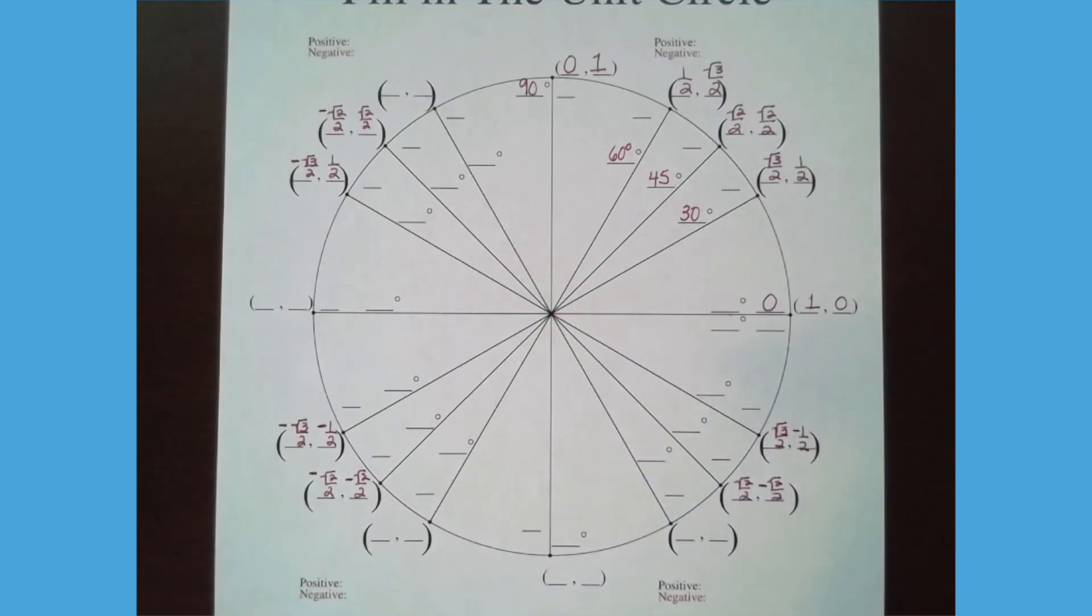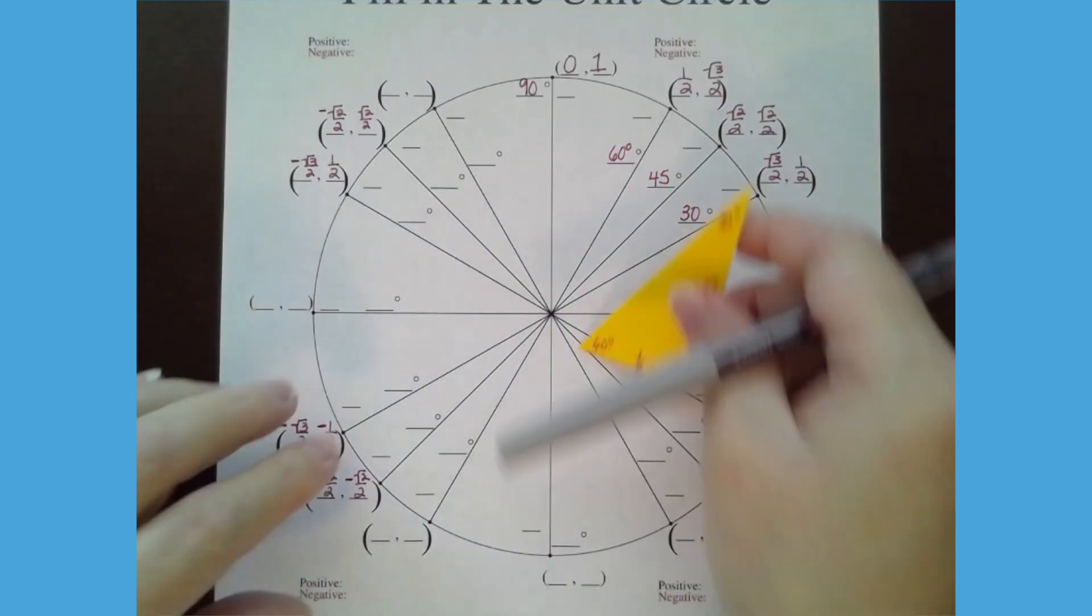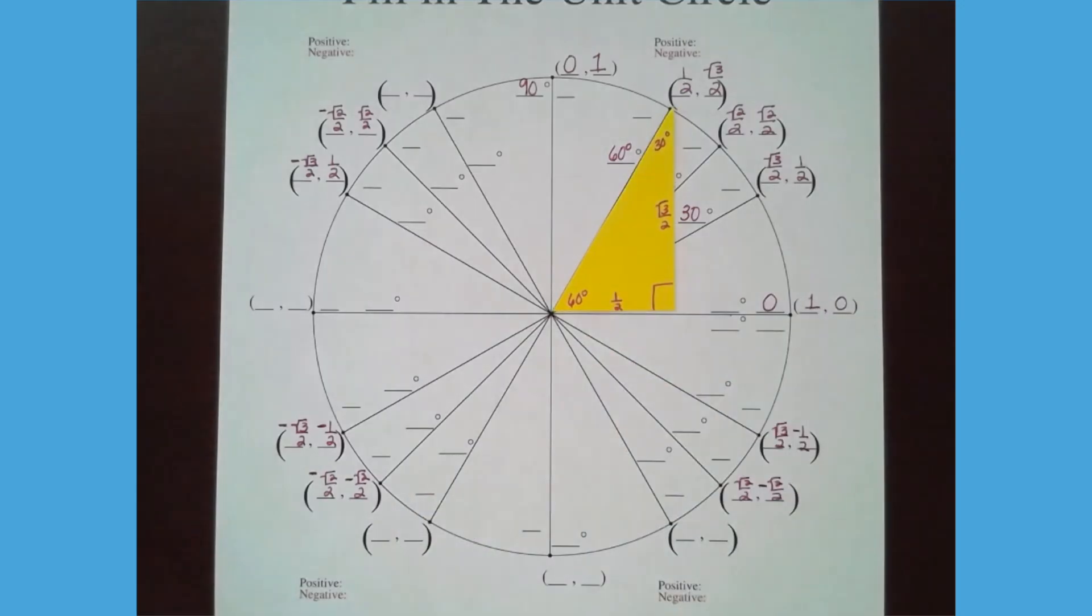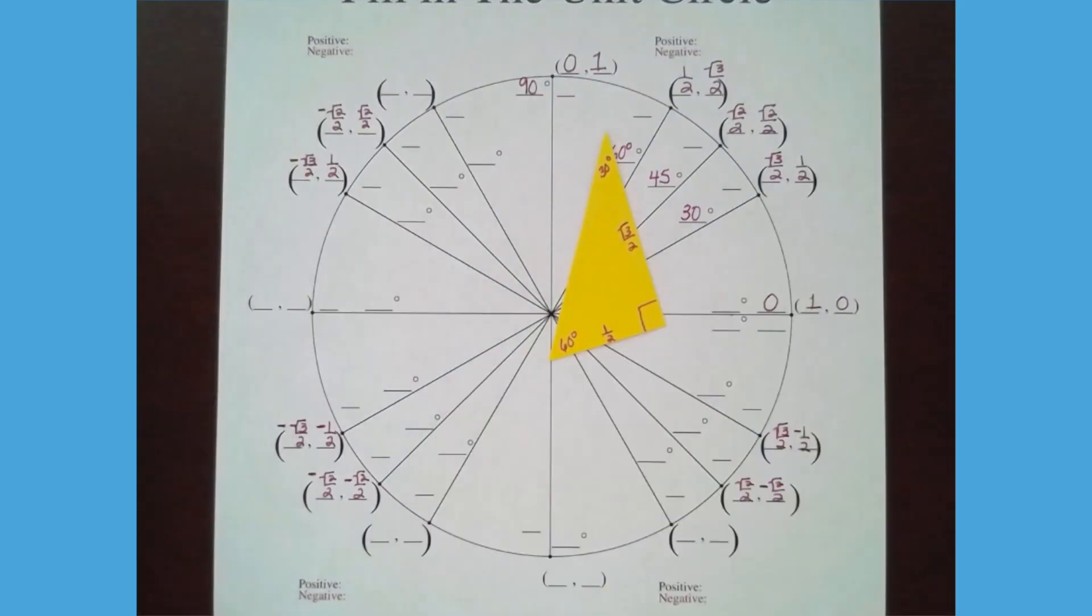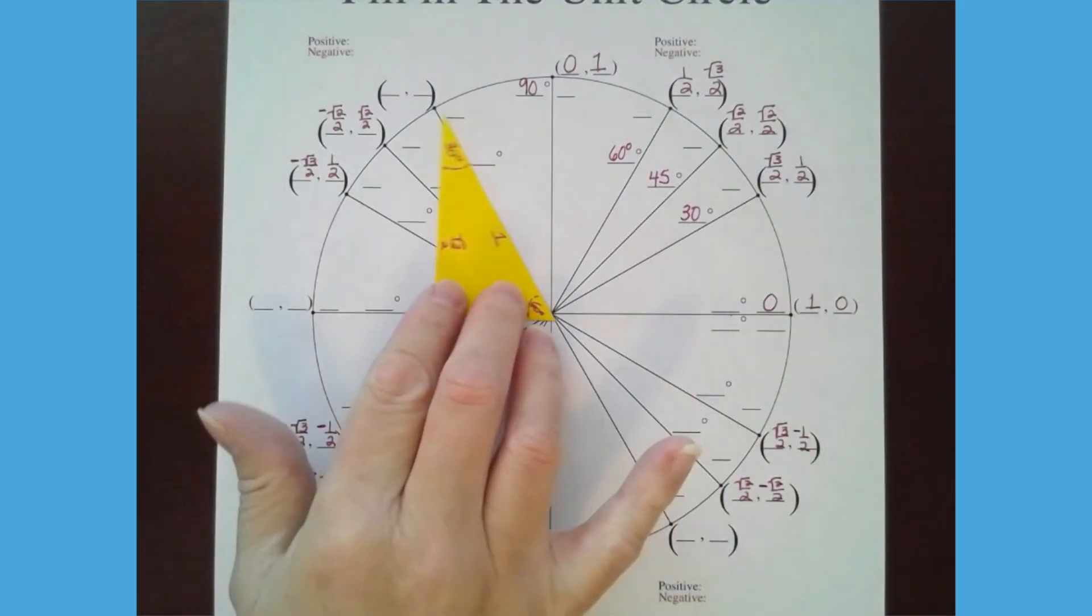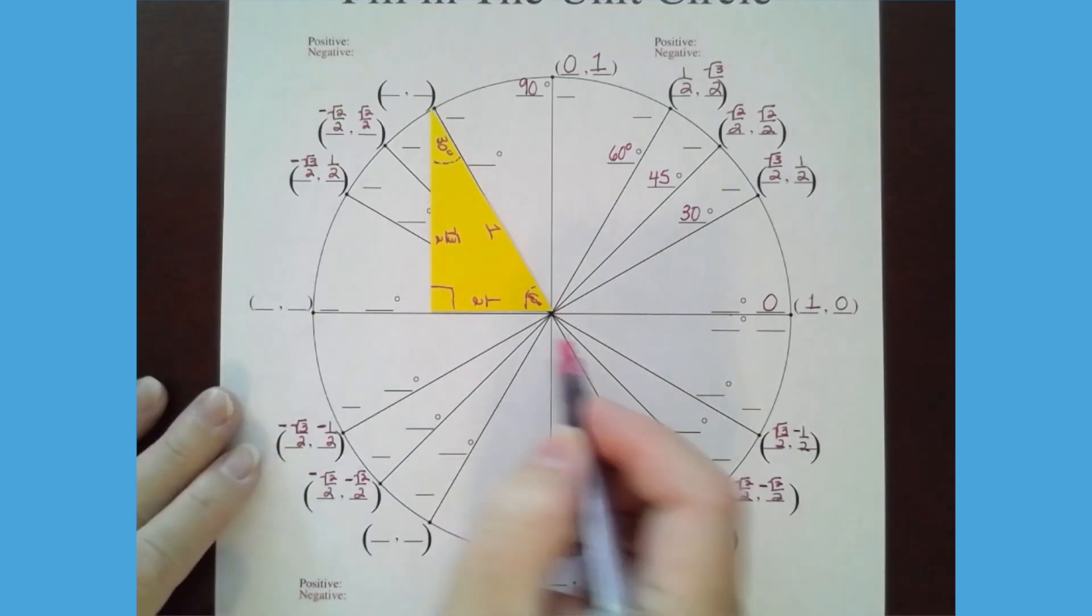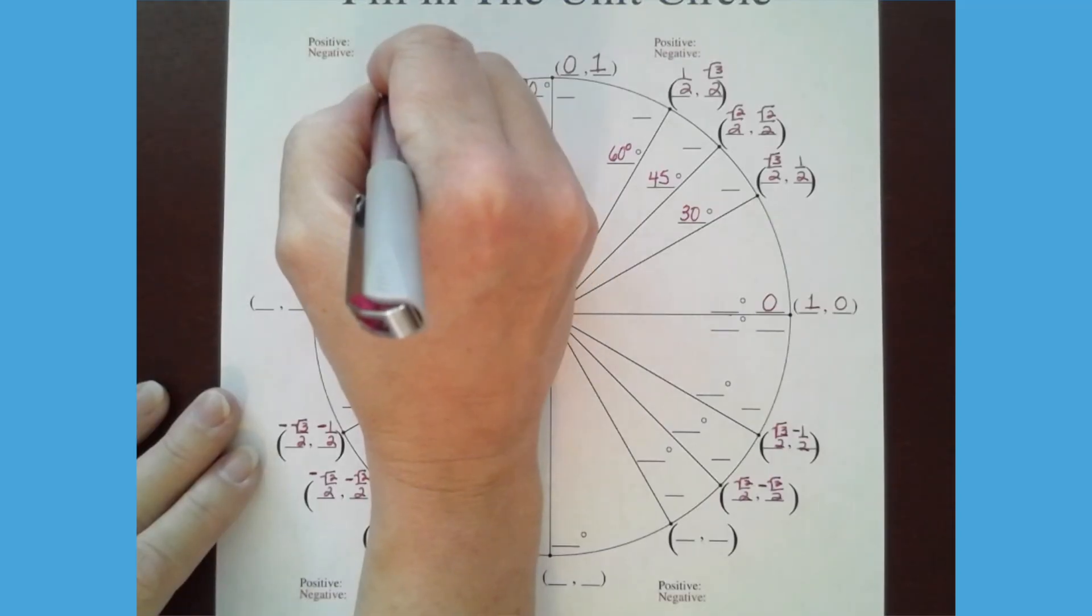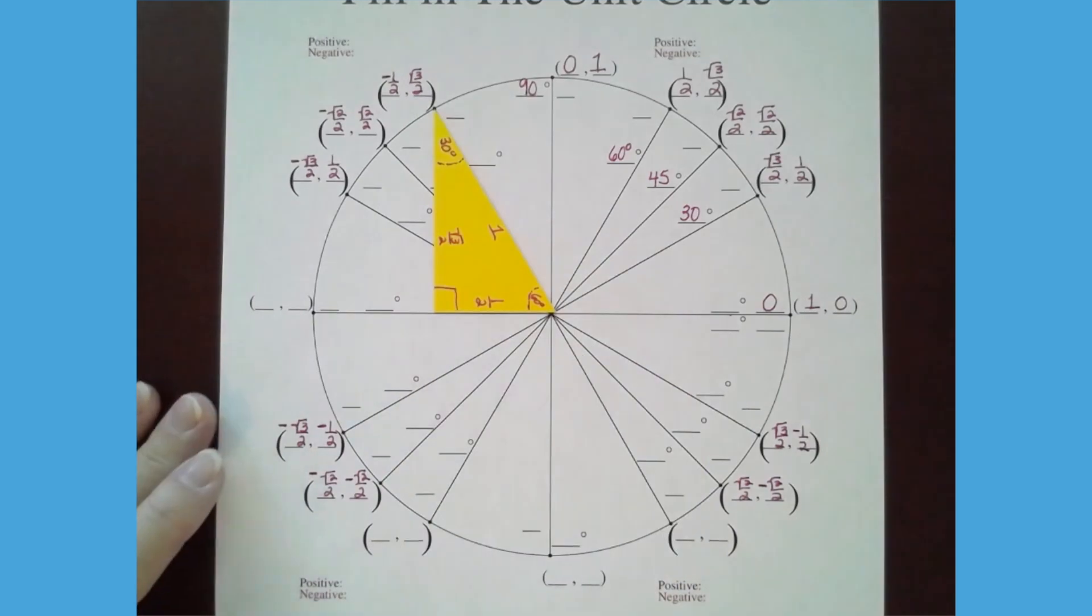And now let's take our 30 degree triangle that we had, make it our 60 degree triangle by turning it around. There it is. So this one is go right or left a little bit, go up a lot. So let's flip this guy over. Here we go. So over a little bit is one half, up a lot is root 3 over 2. But I went left, so that is a negative. So over a little bit, but when I say left a little bit, that's negative one half. Up a lot is root 3 over 2.